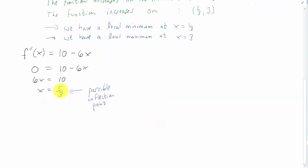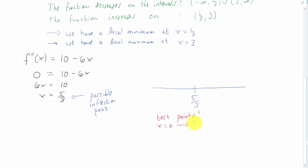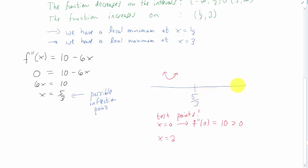To determine if x equals five thirds is an actual inflection point, we need to look at our intervals of concavity and see if concavity changes to the left and to the right of that possible inflection point. If we choose an x value to the left of five thirds — let's say x equals zero — and plug it into our second derivative, we get ten, which is a positive number, meaning our function is concave up right here. If we choose an x value to the right of five thirds, maybe x equals two, and plug that into our second derivative, I'm getting negative two, which is less than zero, meaning our function is concave down on that interval.